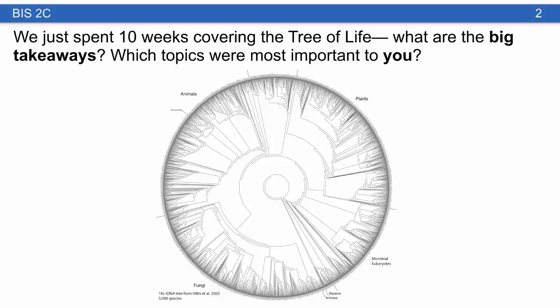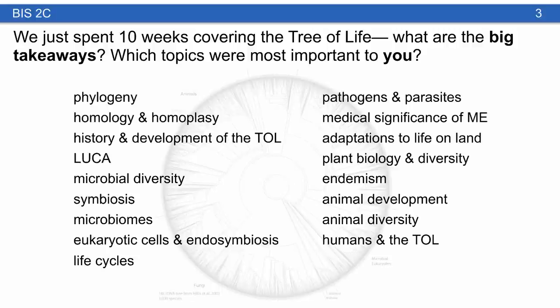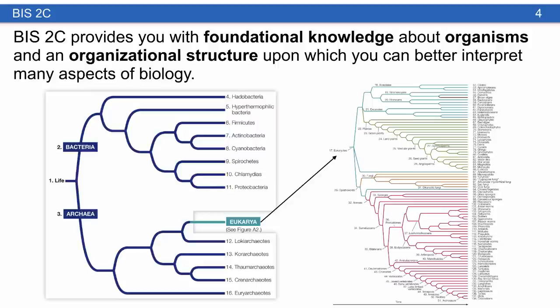We just spent the past 10 weeks covering the Tree of Life. One of the first questions I have for you is what are the big takeaways? What topics were most important? BIS2C really provides foundational knowledge about organisms and about organizational structure in terms of phylogeny, so that you can better understand and interpret many aspects of the biology you're about to learn in your upper division classes.